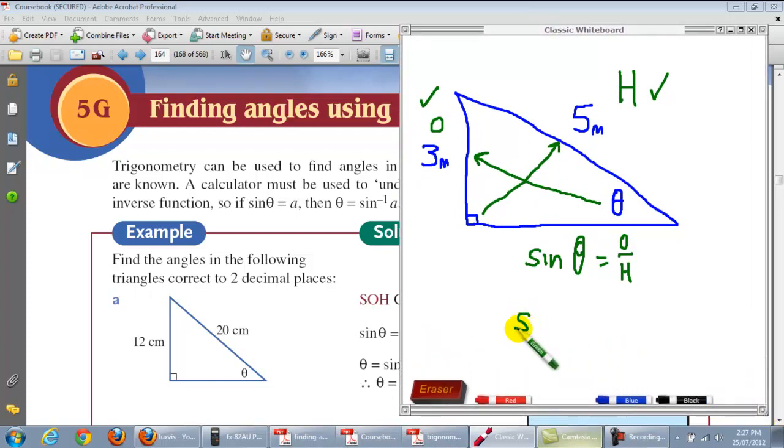So we just leave it as sine theta equals what's O? 3 over and what's H? 5. So how do we find this angle?